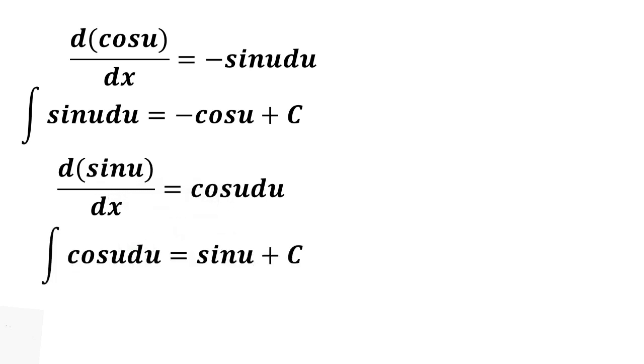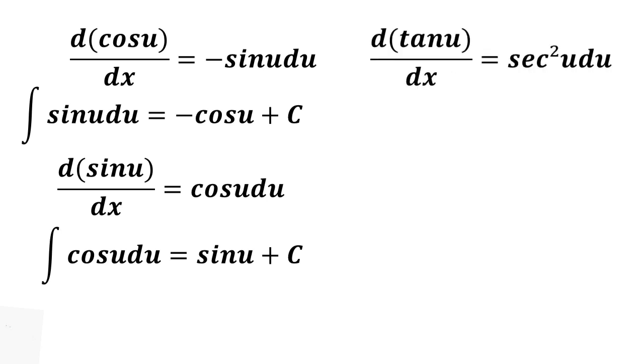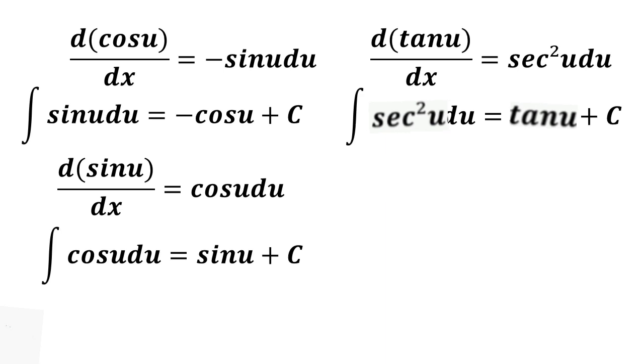The derivative of tangent u is equal to secant squared u du. The integral of secant squared u du is equal to tangent u plus c.